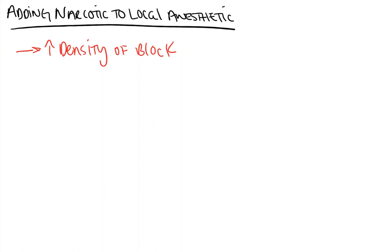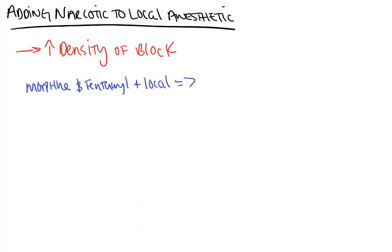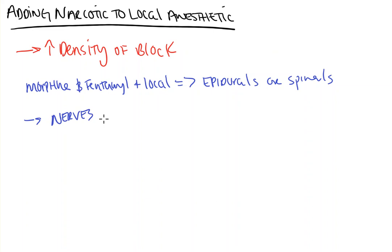You're going to see this most oftentimes — unless you're really a regional person and that's most of what you do or want to do in fellowship — you're going to see a lot of times morphine and fentanyl that are going to be added to your local for your epidurals or spinals. And the reason is that our peripheral nerves and even our central nerves are covered in opioid receptors.